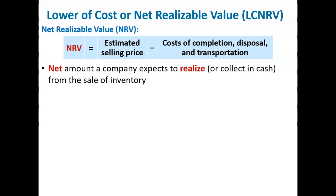Hi, everybody. Welcome back to Chapter 9. Companies that use FIFO, average cost, or any other method besides LIFO or retail inventory method to report inventory use the lower of cost or net realizable value approach.